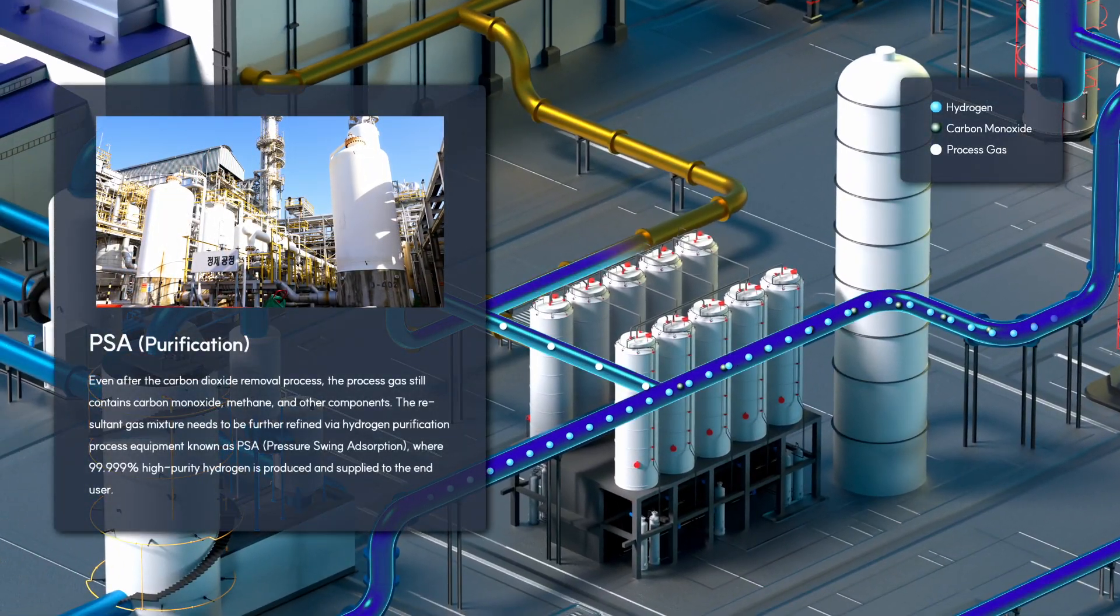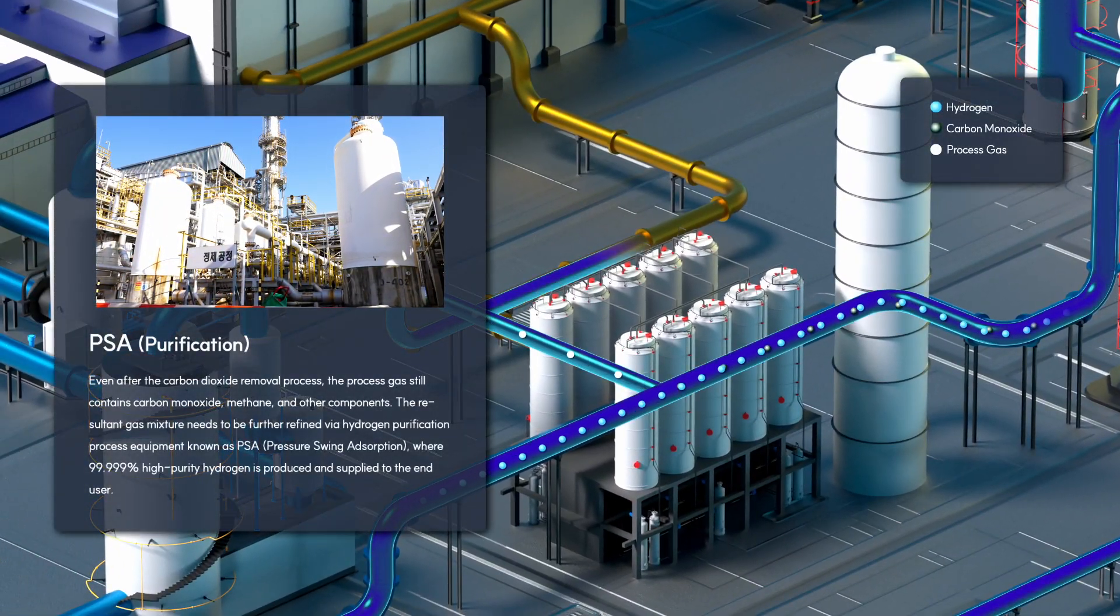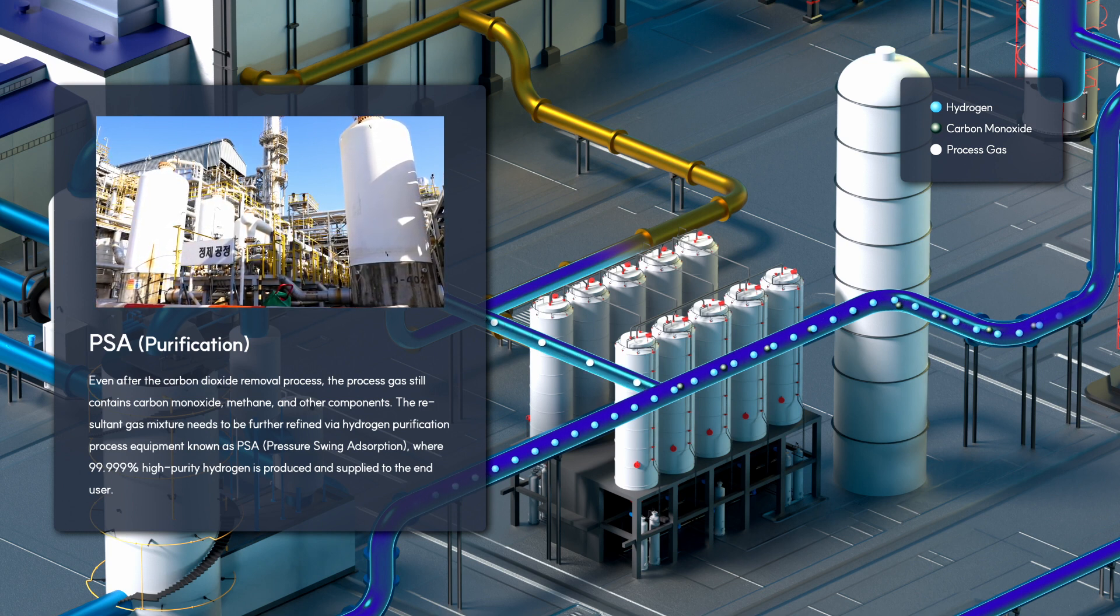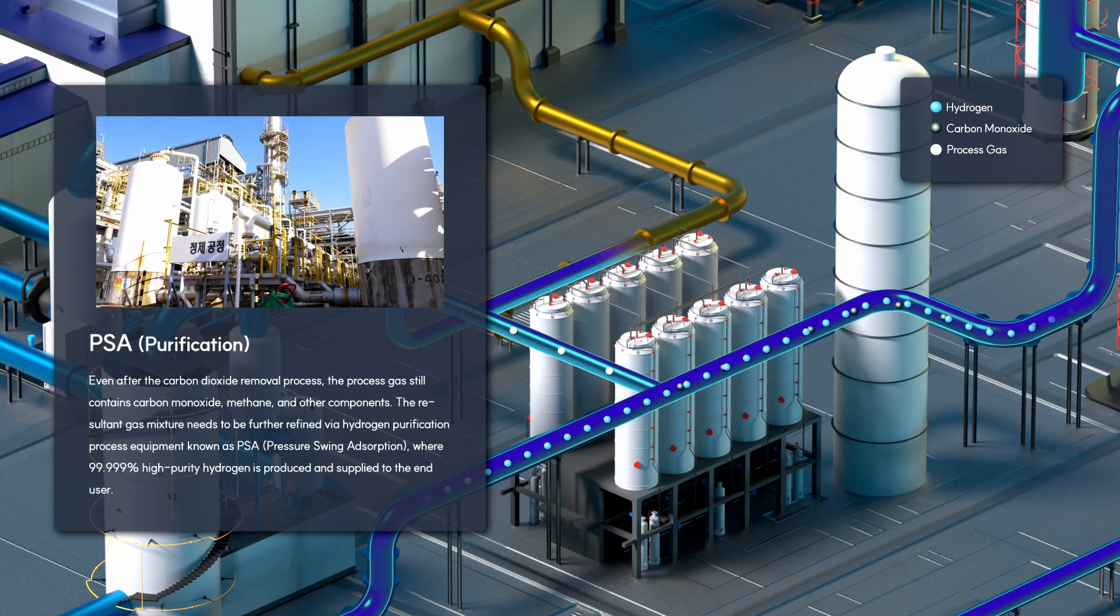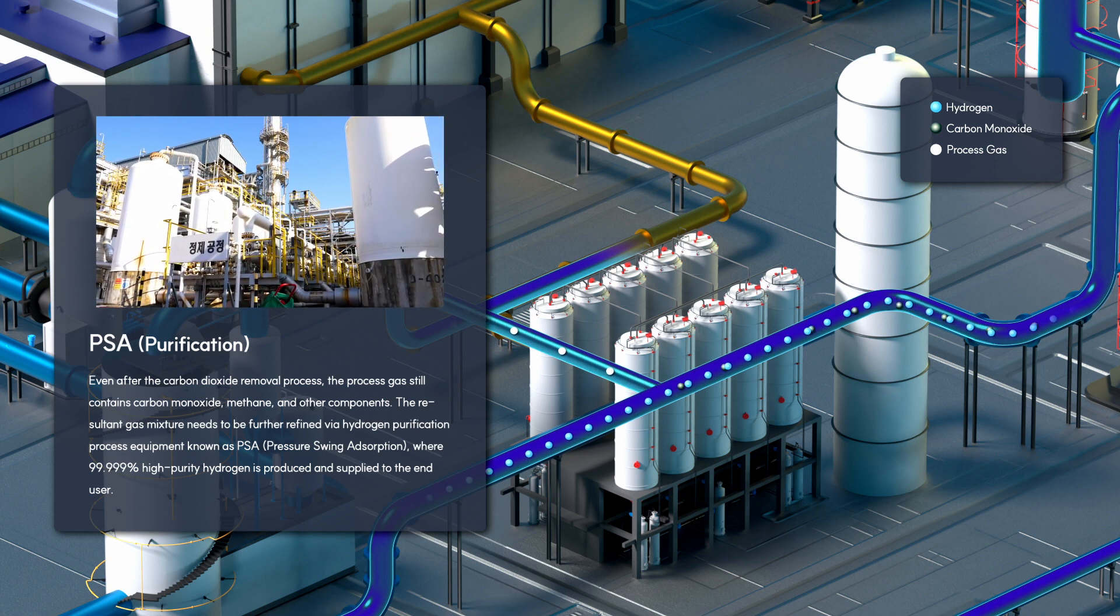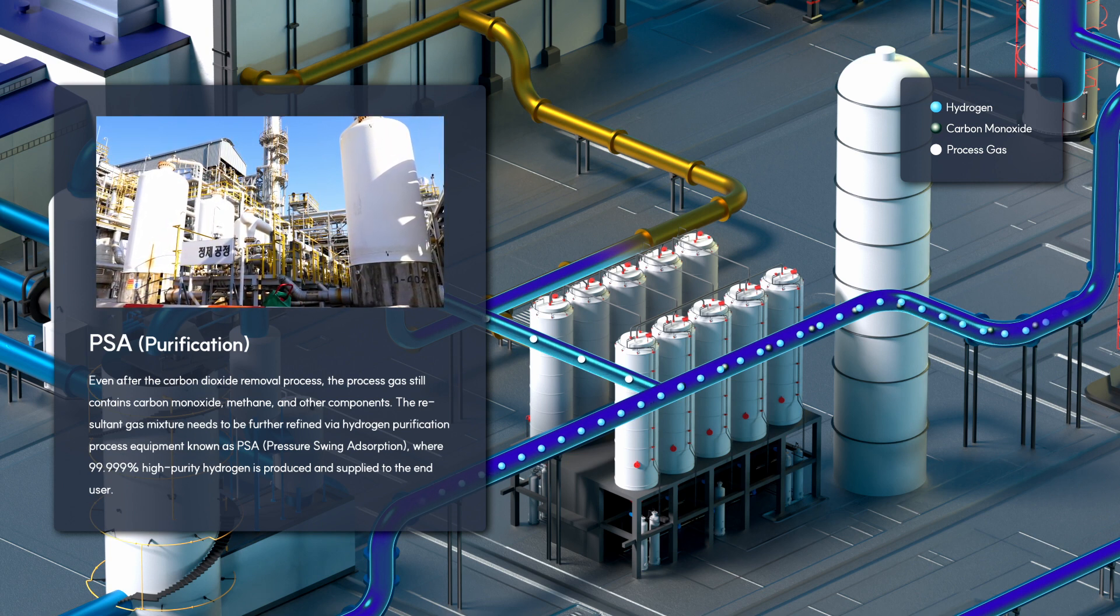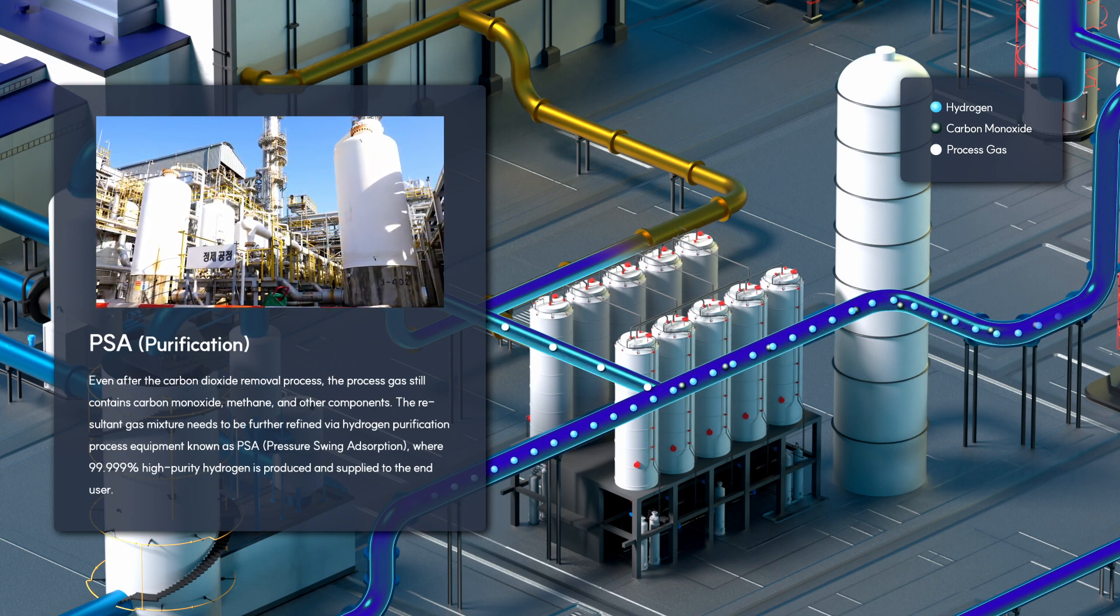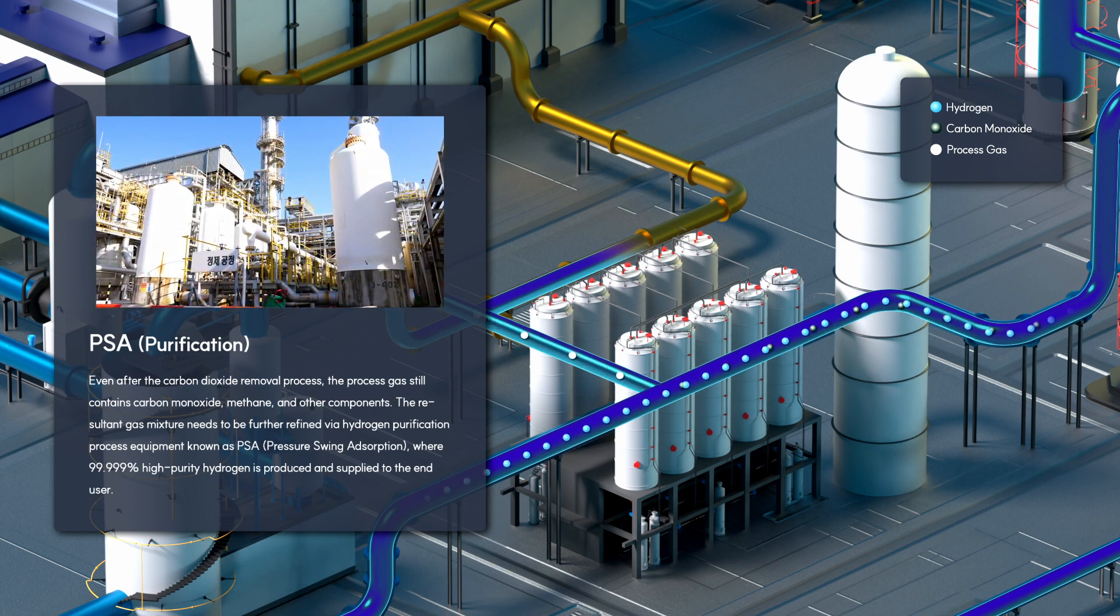Even after carbon dioxide removal, the process gas still contains carbon monoxide, methane, and other components. The resultant gas mixture is further refined via hydrogen purification process equipment known as PSA, where 99.999% high-purity hydrogen is produced and supplied to the end user.